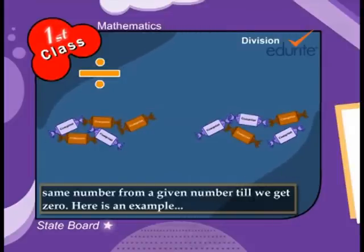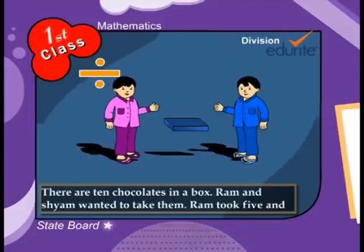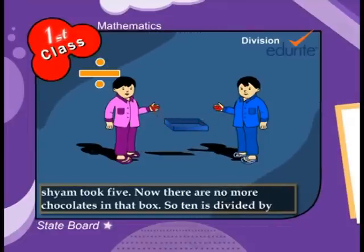Here is an example. There are 10 chocolates in a box. Ram and Shyam wanted to take them. Ram took 5 and Shyam took 5.